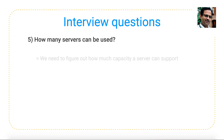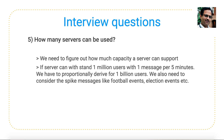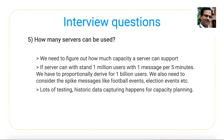The fifth question is: how many servers are needed? This is determined through capacity planning. For example, if one server can handle 1 million users sending one message per 5 minutes, we proportionally derive the number of servers needed for 1 billion users, also accounting for traffic spikes like football events or New Year. We take one node, measure its capacity — how many connections and users it can handle — and then scale proportionally. If one machine handles 1 million users, 10 machines handle 10 million users.